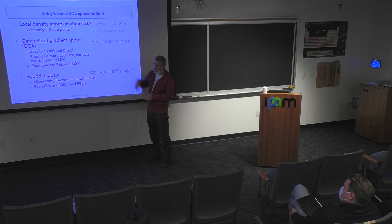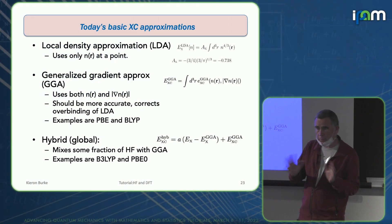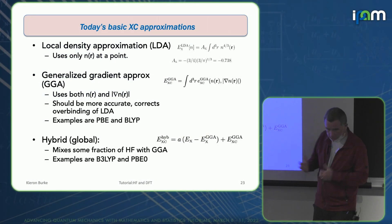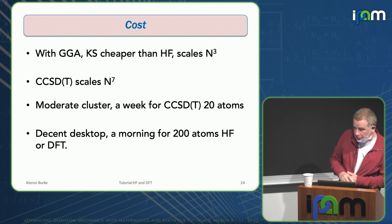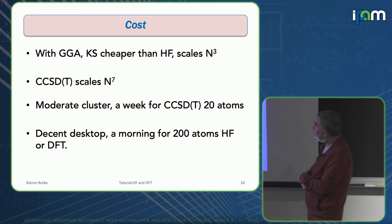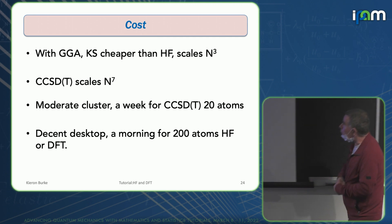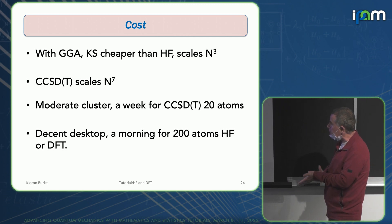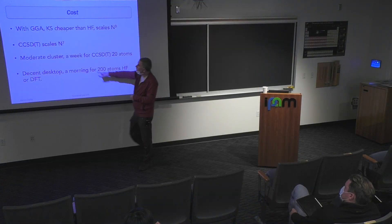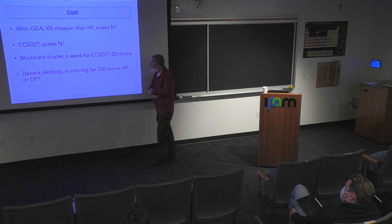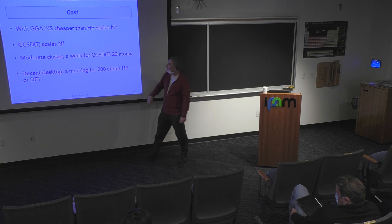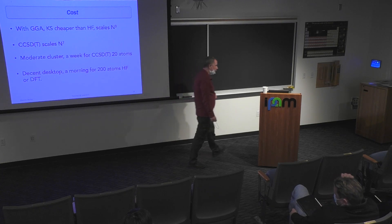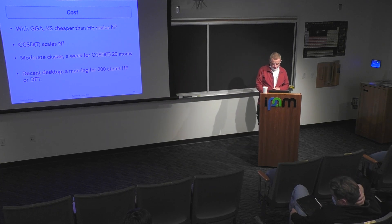The cost is a great deal. With the GGA, the Kohn-Sham is cheaper than Hartree-Fock — it scales as N-cubed, whereas coupled cluster scales as N-to-the-seventh. So you can spend a week doing 20 atoms with coupled cluster on a moderate computer cluster, whereas you can do a DFT calculation ten times as big on your desktop in the morning. Coupled cluster usually gives very good answers, but it's too slow — you can't do systems big enough.